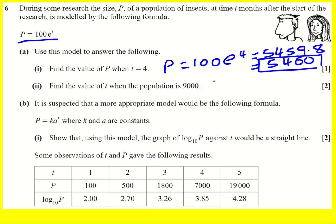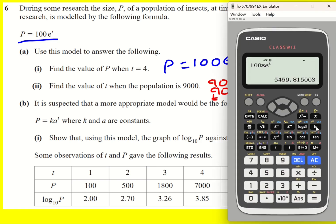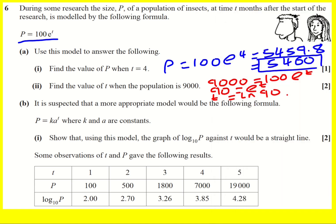Find the value of t when the population is 9000. This is just a reverse problem so now create the equation 9000 equals 100 e to the t, divide through by 100 so 90 equals e to the t. Then you can just write down that t equals ln 90, because that's what ln is finding - it's saying what do I raise e to the power of to get 90 and that answer is t. So 4.499 or 4.50.